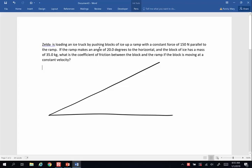Zelda is loading an ice truck by pushing blocks of ice up a ramp with a constant force of 150 newtons parallel to the ramp. The ramp itself makes a 20 degree incline, and the block of ice has a mass of 35.0 kilograms. I want to know what is the coefficient of friction between the block and the ramp if it's moving at a constant velocity.